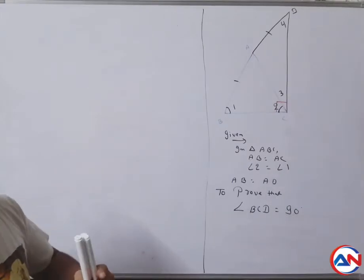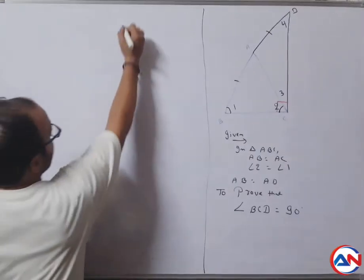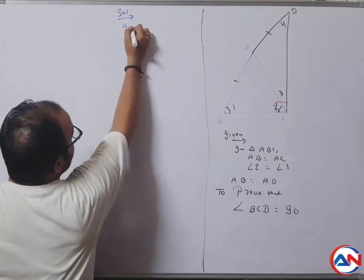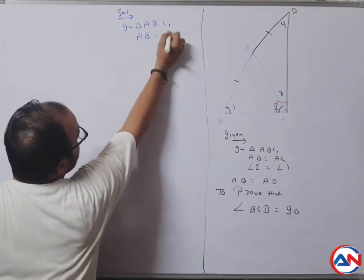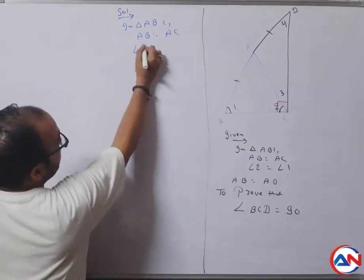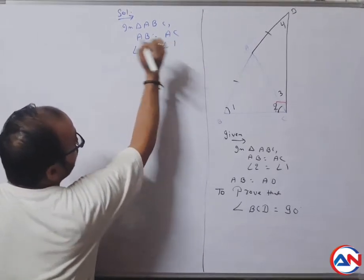Solution: In triangle ABC, AB equals to AC. Therefore, angle two equals to angle one.